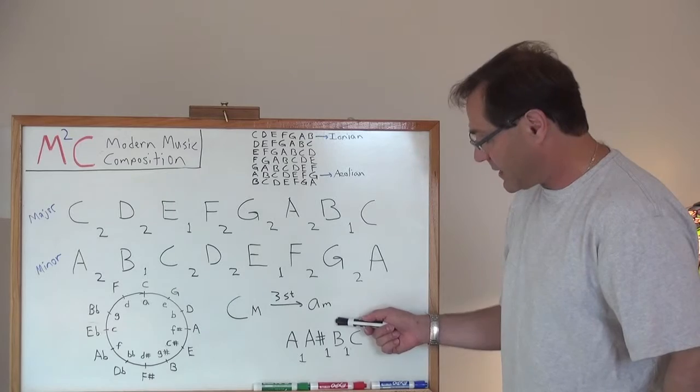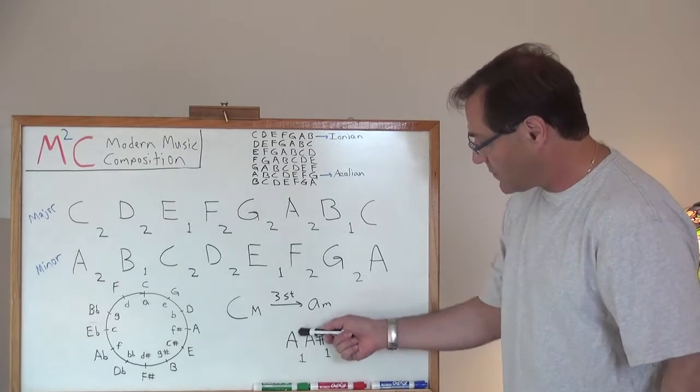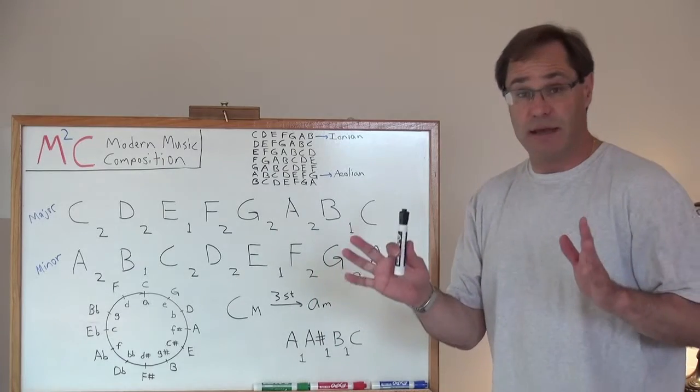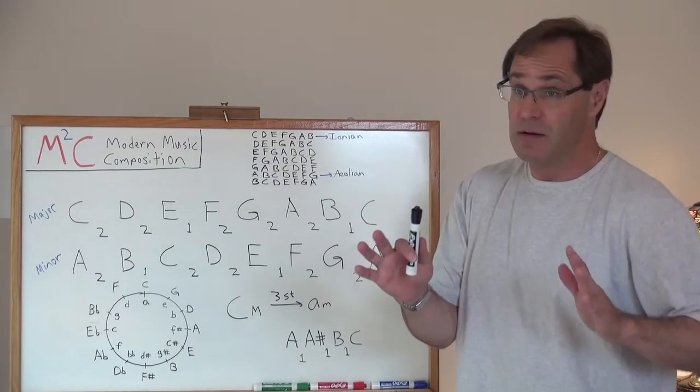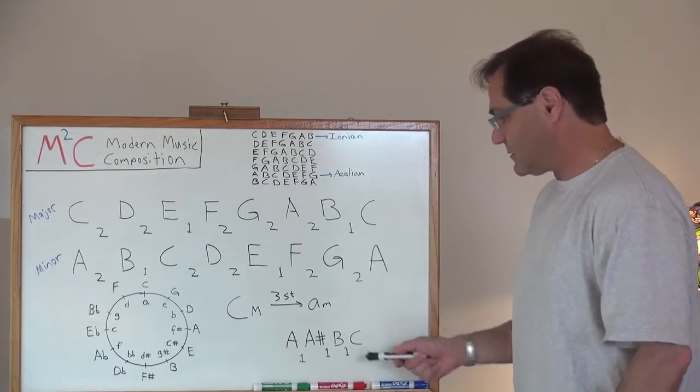I've got to go to B, I've got to get to A sharp, and then I've got to get to A. So that's one, two, three semitones. And likewise, to get from any minor to its relative major scale, you just go up three semitones.